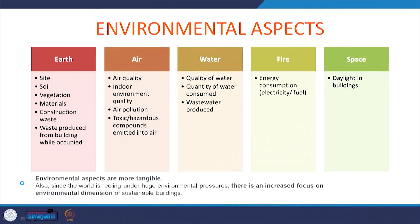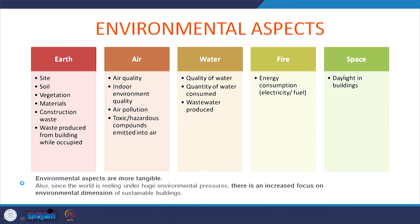All these environmental aspects can be clubbed in the bins of the five basic elements of nature, which are earth, air, water, fire — which I say energy — and space. All these five elements directly govern the environmental aspects of buildings. For example, when we are talking about earth, we are talking about site, soil, vegetation, materials, construction waste, and the waste produced from buildings while they are occupied. All these come within the earth element of the environmental aspect.